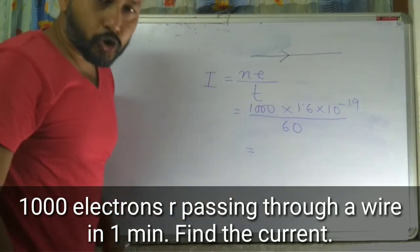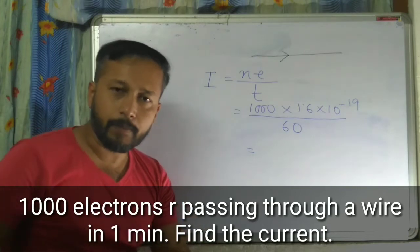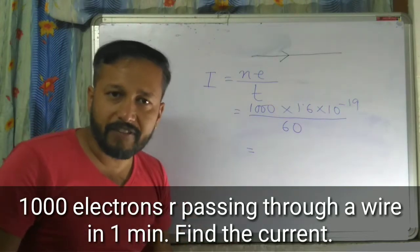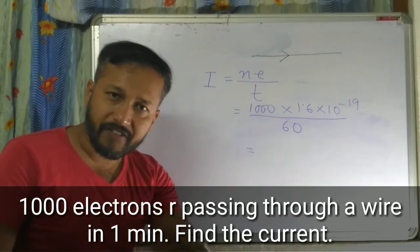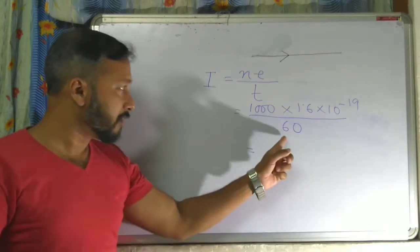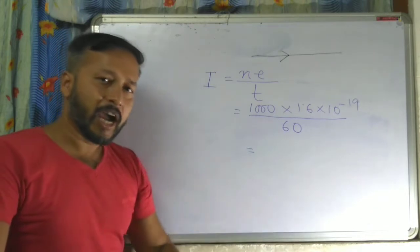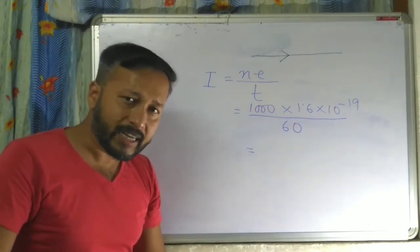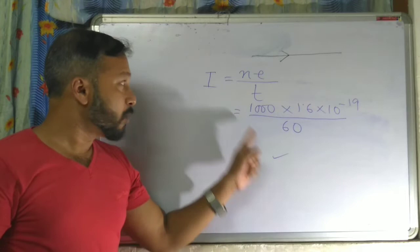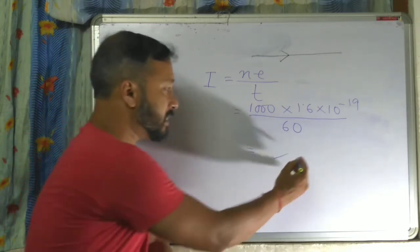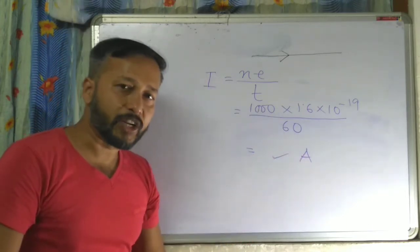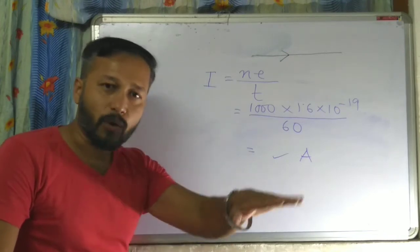If time is given in seconds, directly put the value. If time is given in minutes, convert it to seconds — don't forget. Then put the values and calculate. After calculation, whatever you get is the answer — that is the amount of current in ampere passing through that wire.